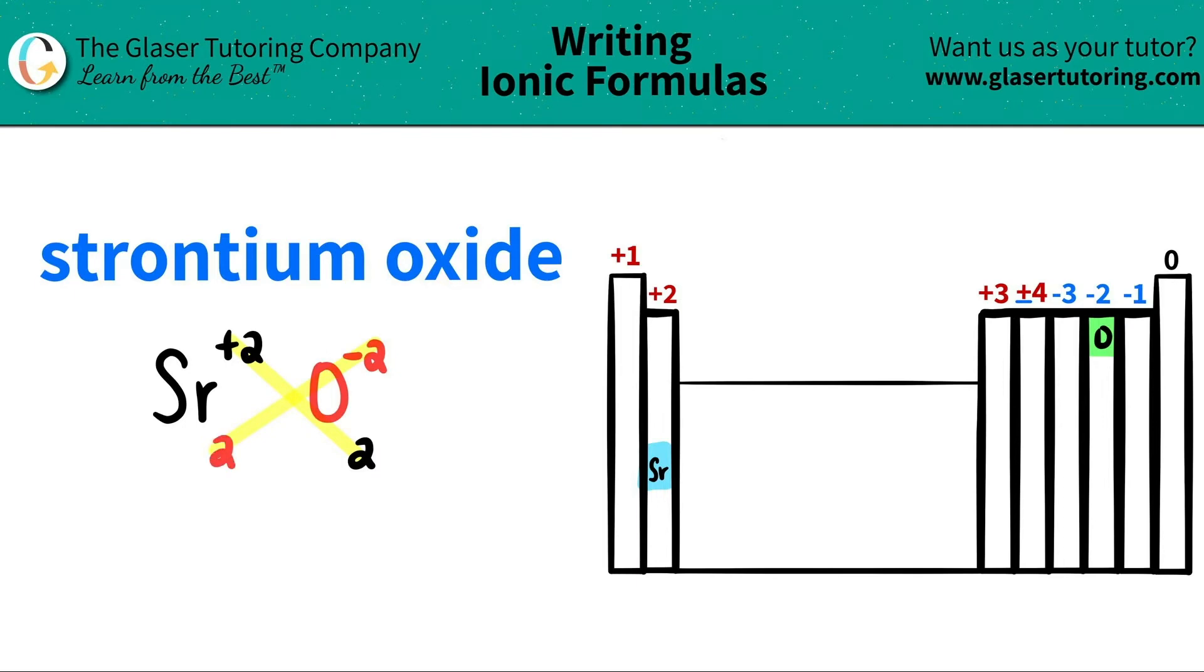But here's the thing guys, since this is an ionic compound, I have a metal and a non-metal. I need to show this in the most simplified form. Ionic compounds always need to be simplified. So when you have the same number of each that's higher than 1, you need to simplify this by division.